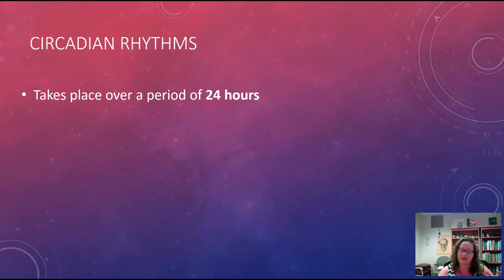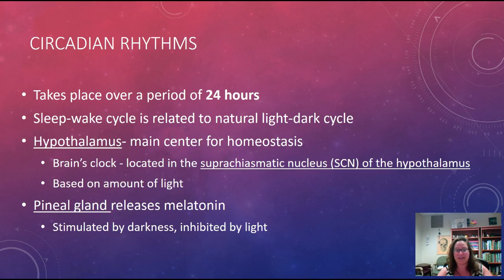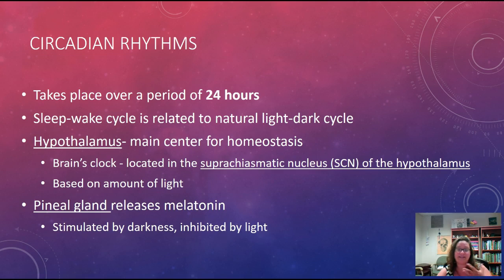Circadian rhythms take place over a period of about 24 hours. The sleep-wake cycle is often mentioned with circadian rhythms and is related to the natural light and dark cycle. If you've ever been camping and noticed you start going to bed earlier and waking up earlier, your body is adjusting to that light-dark cycle. Our hypothalamus — specifically the suprachiasmatic nucleus, or SCN — acts as the brain's clock.